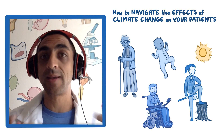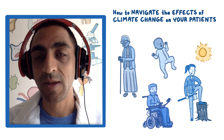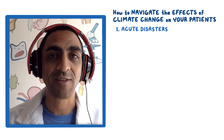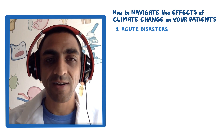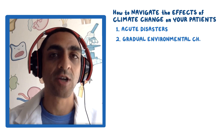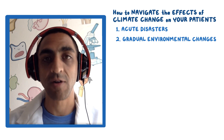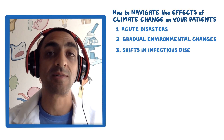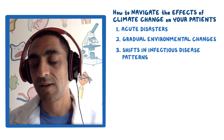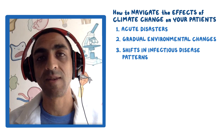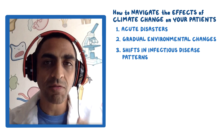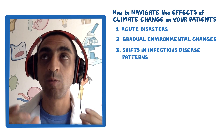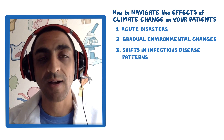The three big categories to walk away from this piece are: acute disasters — floods, fires, things like that; gradual environmental changes, the slow warming of temperatures; and shifts in infectious disease patterns, where new diseases appear in areas that never used to see those kinds of infections. I want to walk through them one by one and give you specific to-dos.